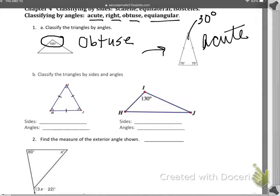Let's talk about classifying by sides and by angles. If you're going to classify by sides, you have three options listed up here. You can barely see them on my tape, but you have it on your worksheet. Scalene, equilateral, and isosceles are the classifications.